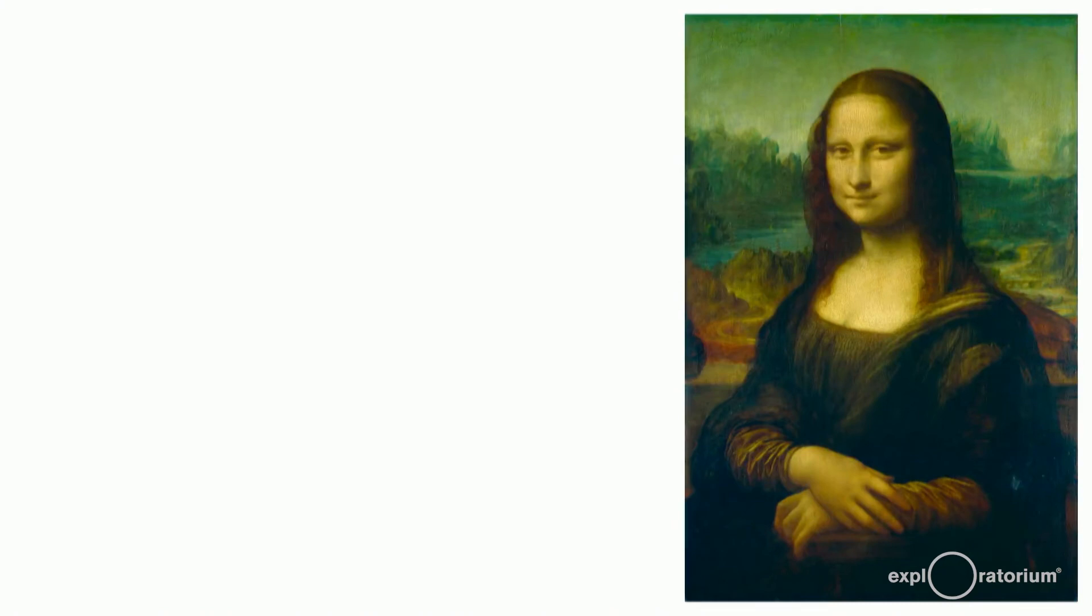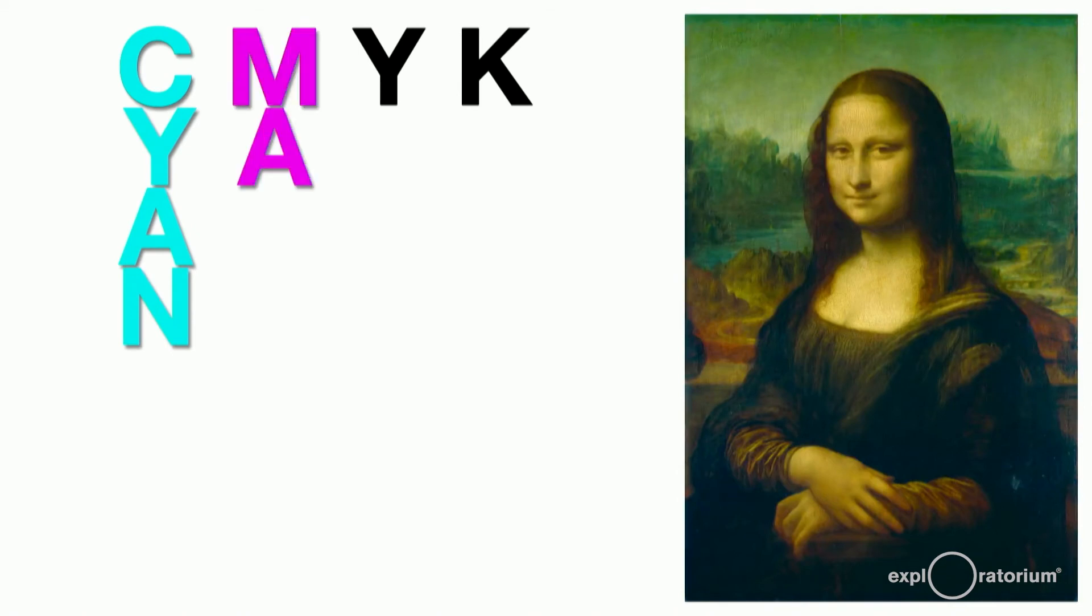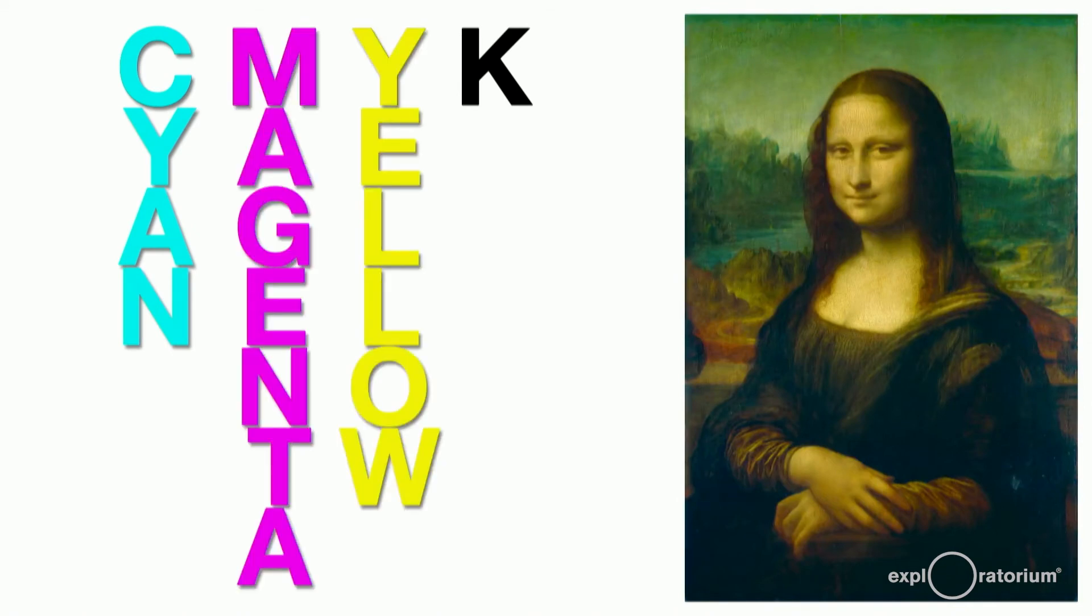You may have heard it referred to as CMYK processing. The letters stand for the colors: cyan, magenta, and yellow. They didn't use B for black because it might be confused with blue. Rather, the K was used because this is the key color.